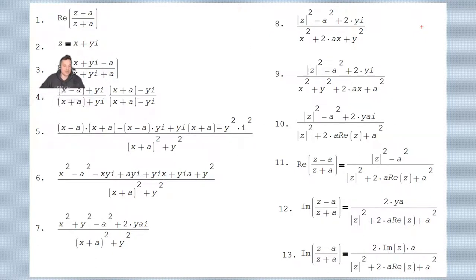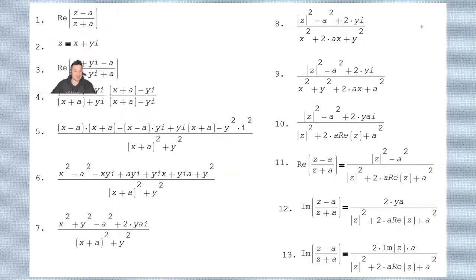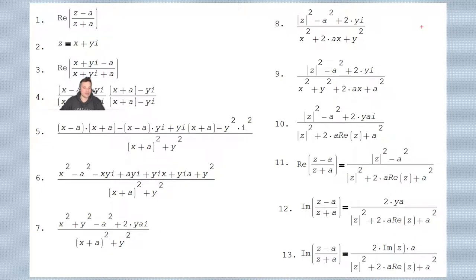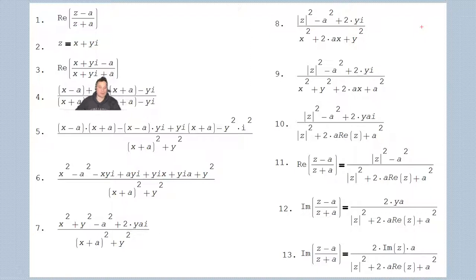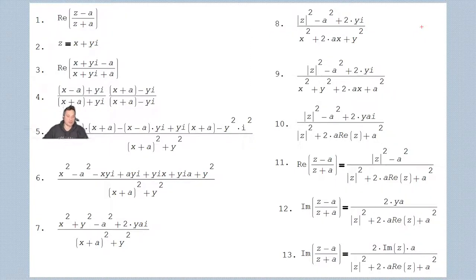To find the real part of z minus a over z plus a, we can write it as x plus yi minus a over x plus yi plus a. I want to group the x and negative a together on top, and x with positive a on the bottom, because they're similar values — all real numbers. So it ends up being x minus a plus yi over x plus a plus yi.